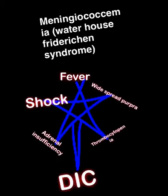The other condition in which this organism spreads to the whole body manifests as Waterhouse-Friderichsen syndrome. Features seen in the patient include fever, shock when blood pressure drops and pulse is very high, widespread purpura, adrenal insufficiency, thrombocytopenia, and disseminated intravascular coagulation (DIC).